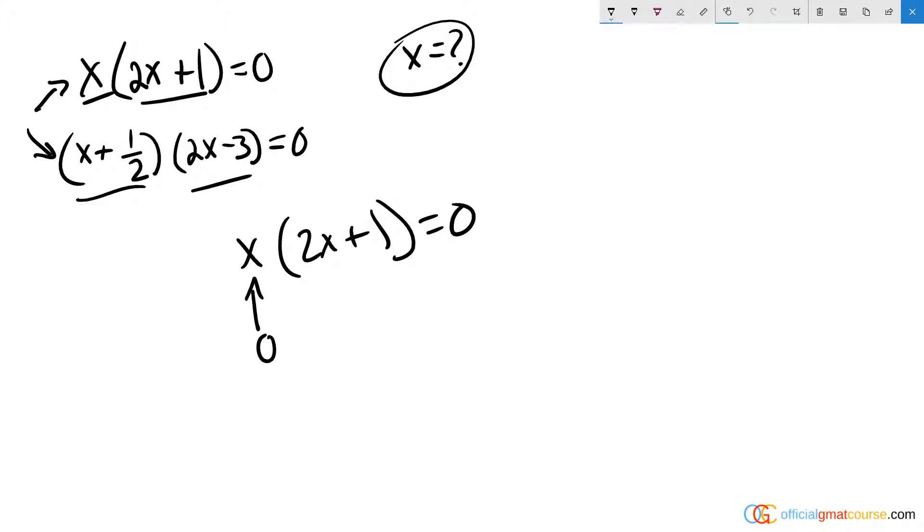And that would mean that X would be negative one half, because two times negative one half will give a negative one, plus one will wipe out this interior of the parentheses and make it zero.